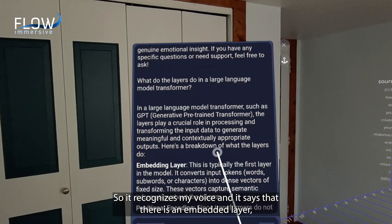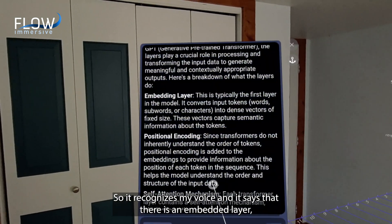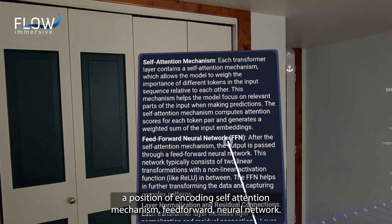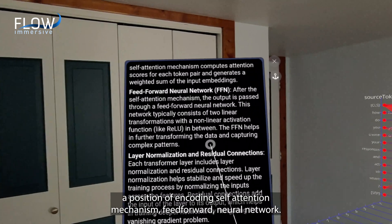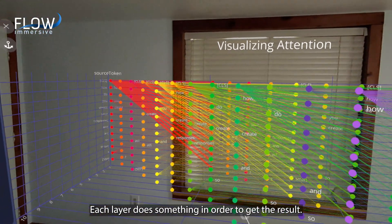So it recognized my voice and it says that there is an embedding layer, a positional encoding, self-attention mechanism, feed forward neural network. Each layer does something in order to get the result.